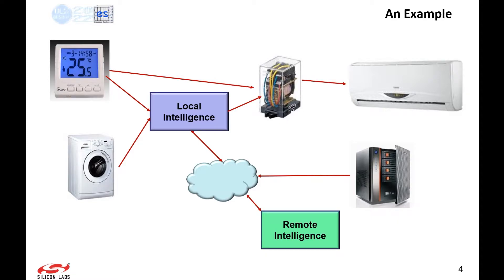Extending this concept further: if you want to minimize electricity costs, your washing machine could run all night, picking up current whenever load in the neighborhood is lower and power charges are instantaneously cheaper. This requires real-time information from transmission authorities. Sending data to a cloud server that also receives notifications from the electricity department enables much better decisions — whether local intelligence or remote intelligence. All of this is IoT, enabled through connectivity.